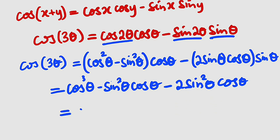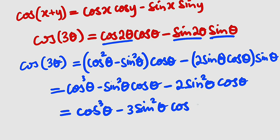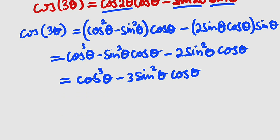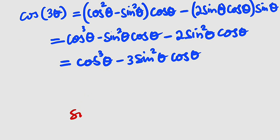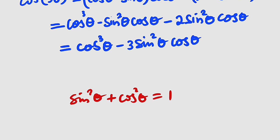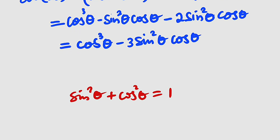So cosine of 3 theta equals cosine cubed of theta minus 3 sine squared theta cosine theta. Recall the Pythagorean identity: sine squared theta plus cosine squared theta equals 1. So we can make sine squared theta the subject: sine squared theta equals 1 minus cosine squared theta.